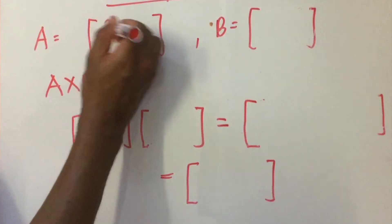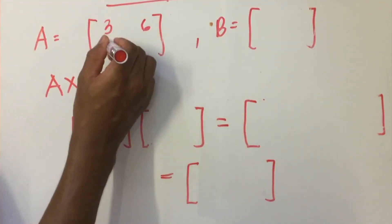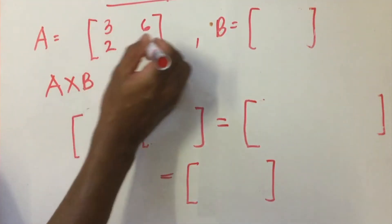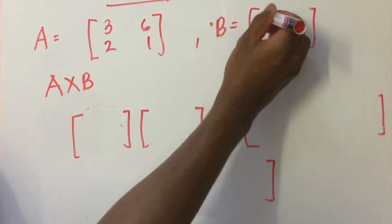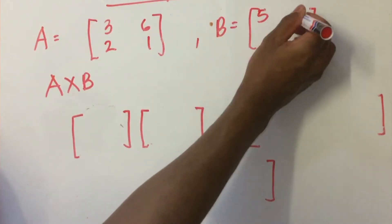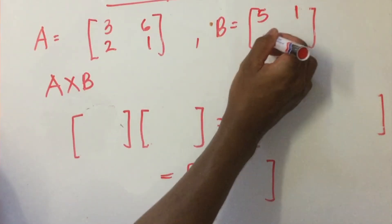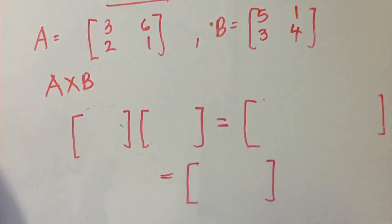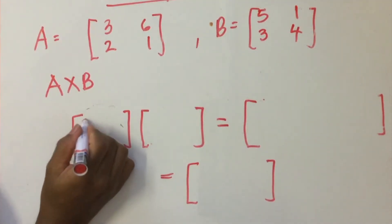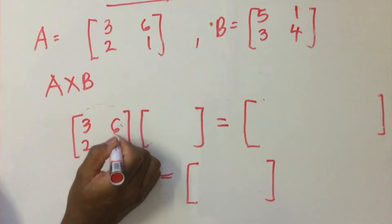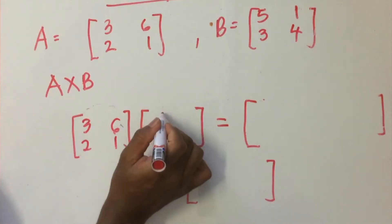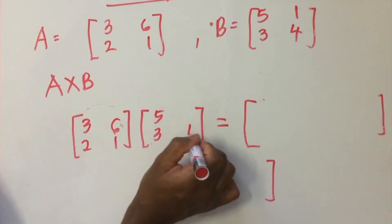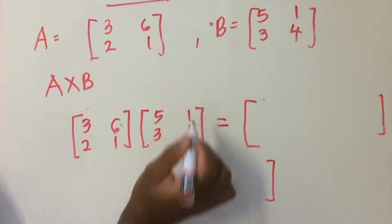For the next example, the matrix values are: 3, 6, 2, 1, 5, 1, 3, 4. The result entries involve: three, two, six, one, five, three, four, and one.